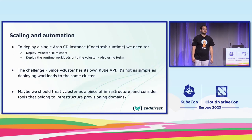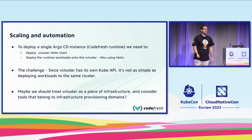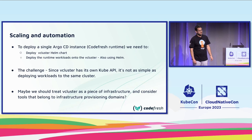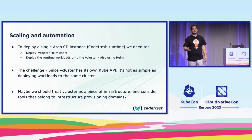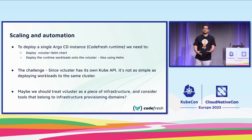Like any SaaS solution — especially ours, since we don't know how many customers or vClusters we'll need — we must worry about scaling and proper automation. To deploy a single instance of our virtual Argo CD, we need to deploy two things: the Helm chart for vCluster, and then the manifests for the virtual Argo CD onto that vCluster. The challenge is that vCluster has its own kube API, so it's not just deploying two Helm releases side by side. You need to deploy the vCluster, get the kubeconfig from it, and then deploy Argo CD onto it. This is essentially infrastructure provisioning — and here comes Crossplane.